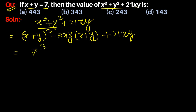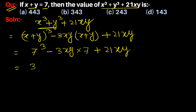So we get 7 cube minus 3xy into 7 plus 21xy, and the cube of 7 is equal to 343. This gives us 343 minus 21xy plus 21xy.